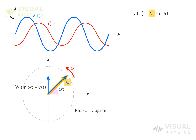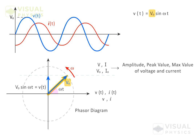For this course, we will use the convention of using capital letters to represent the amplitude, or the peak values or the maximum value of the sinusoidally varying quantities, and we will use small letters to represent their instantaneous or time-varying values. The projection of this vector on the vertical axis gives the instantaneous value of voltage.